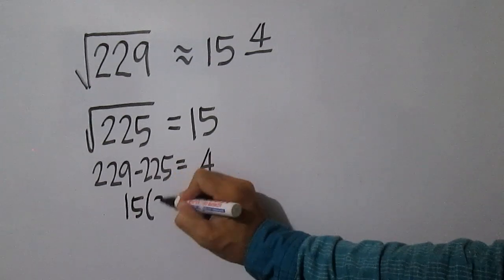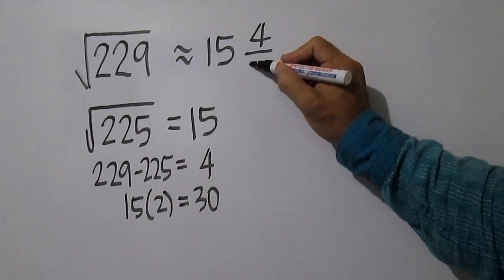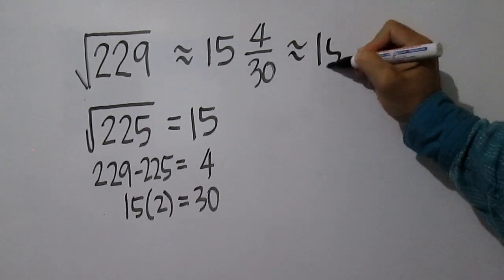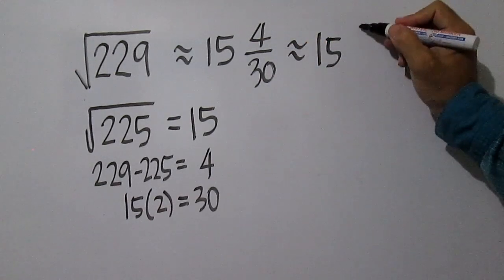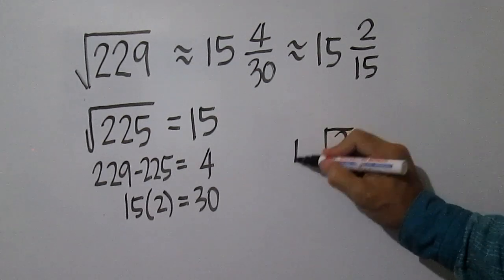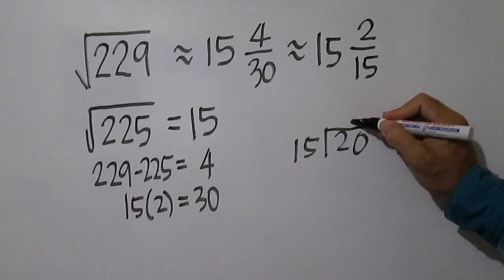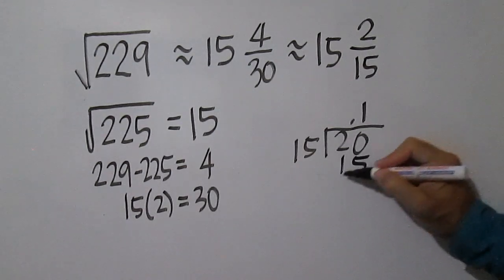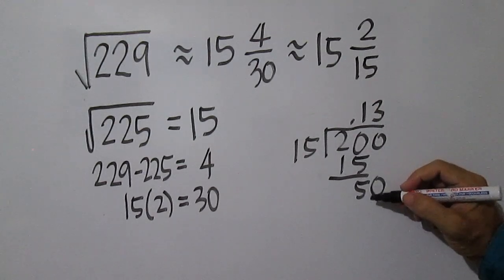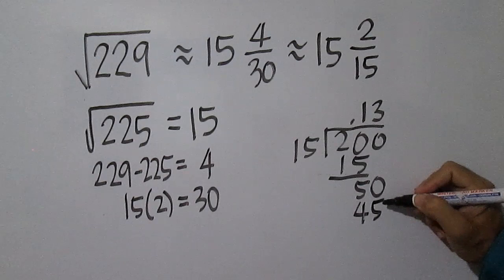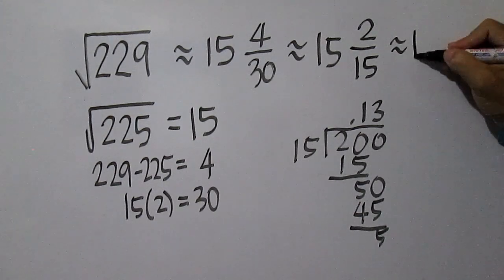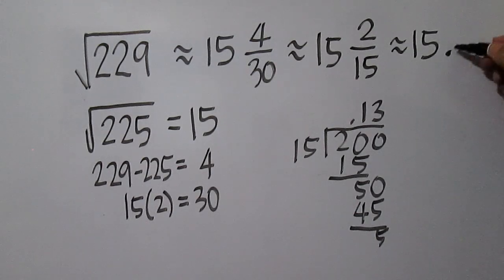Double 15: 15 times 2 equals 30. Simplifying 15 and 4 by 30, this gives 15 and 2 over 15. Divide 2 by 15. The square root of 229 is approximately equal to 15.13.